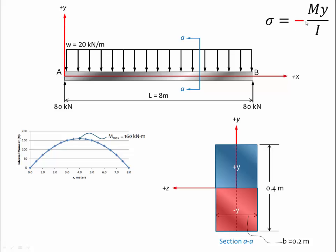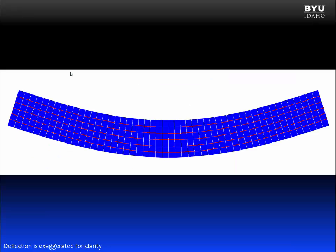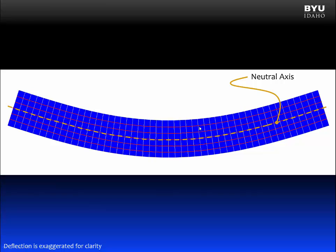Now let's discuss why this negative sign appears in our flexure formula. Let's suppose we have a beam supporting a uniformly distributed load. If we draw the moment diagram, we see that the moment is positive over the entire length of the beam. Now let's suppose the beam has a rectangular cross-section and consider what the deformed shape would look like. Supported at the ends, with the load it's going to bend, and the deflected shape will look something like this. The neutral axis takes a curved shape, and other lines that were initially horizontal on the beam and parallel to the neutral axis will also take that same curved shape.